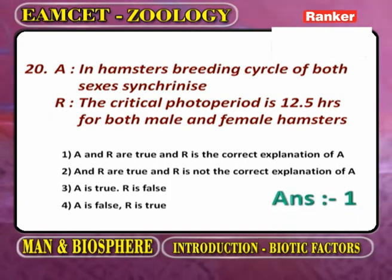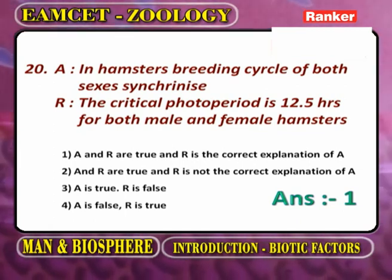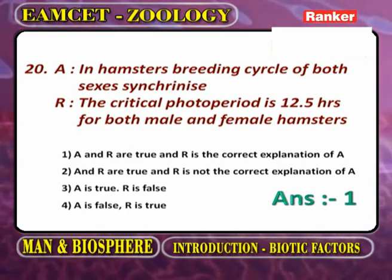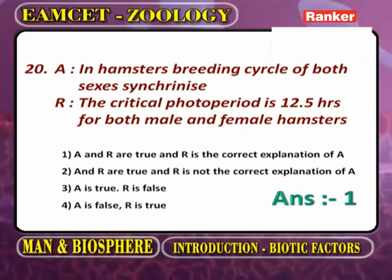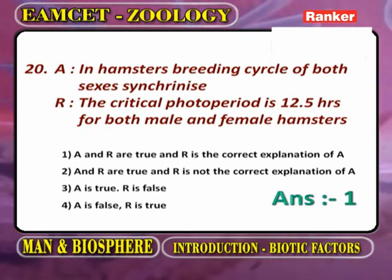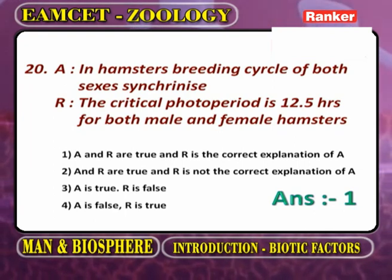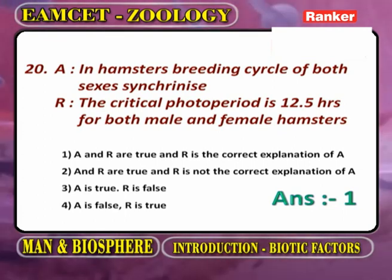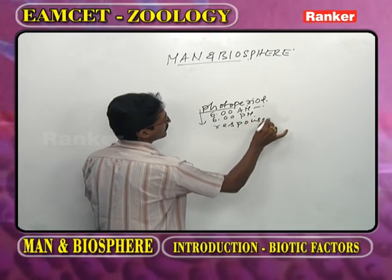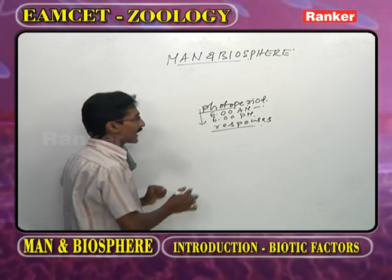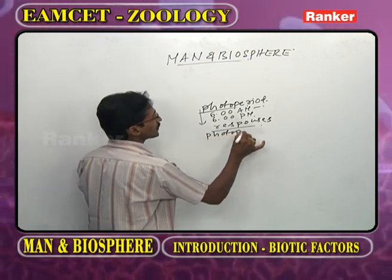Assertion: in hamsters, the breeding cycle of both sexes synchronizes, and the critical photoperiod is 10.5 hours for both male and female hamsters. The photoperiod is the availability of light from sunrise to sunset, approximately 6 a.m. to 6 p.m. Responses during the photoperiod are called photoperiodism.